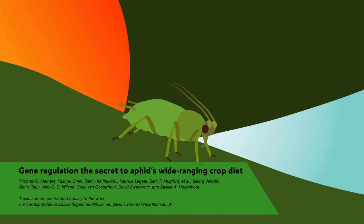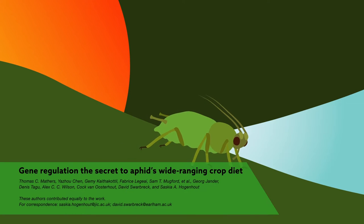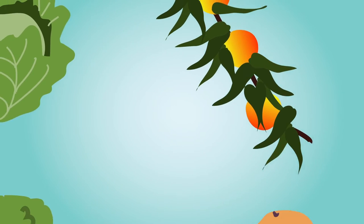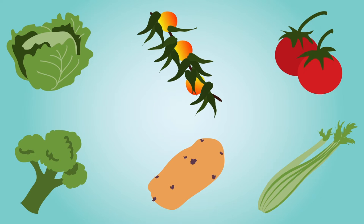Despite the name, green peach aphids don't just feast on peach trees. The insects feed on more than 100 different plants, including vegetables, potatoes, and tomatoes.